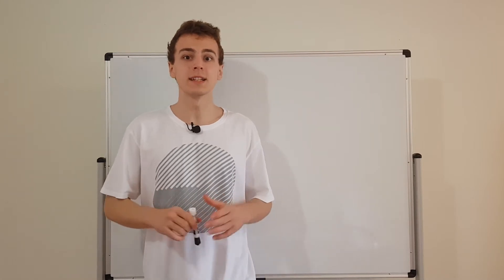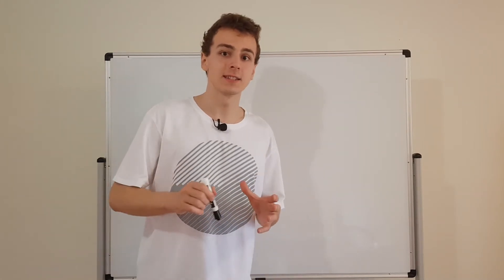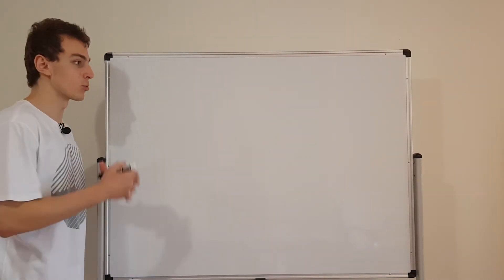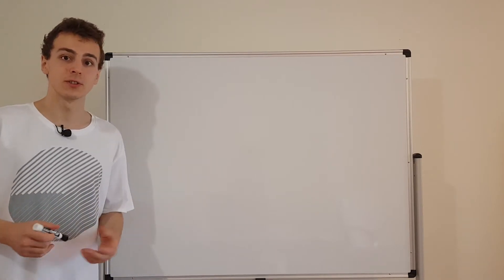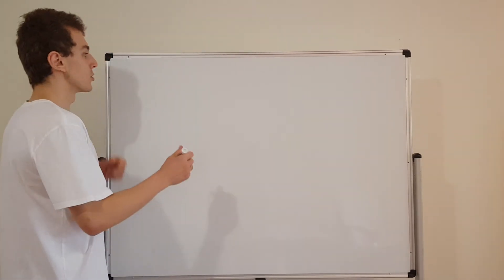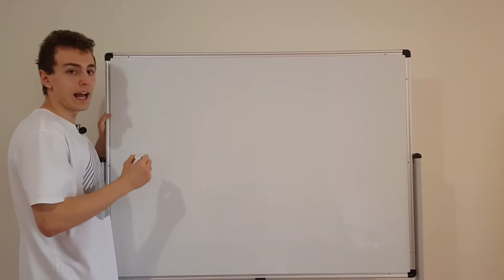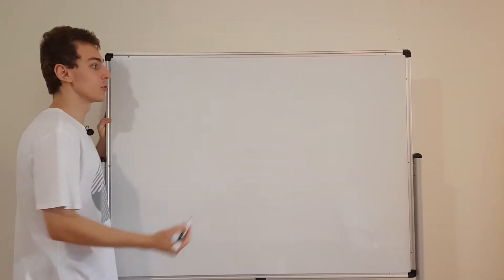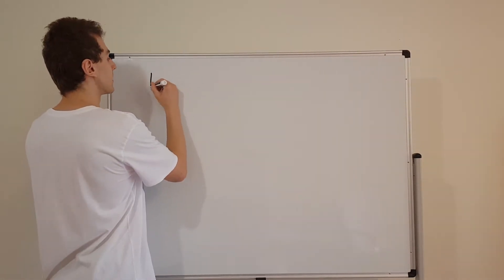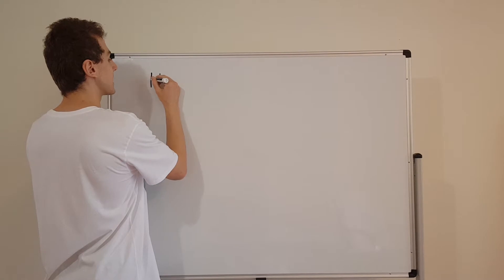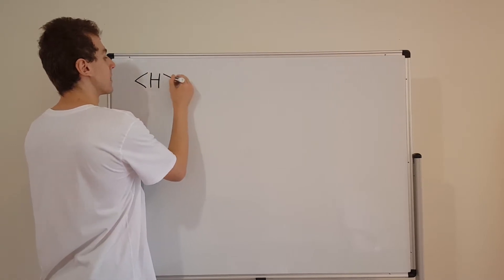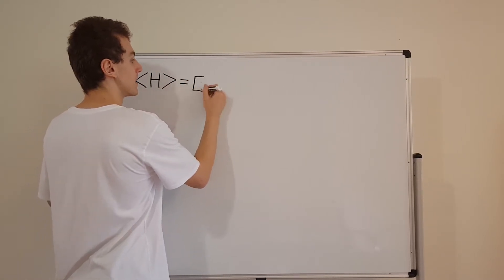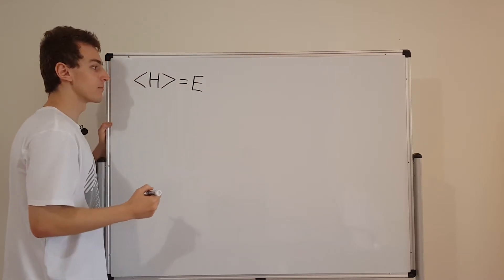First of all, I want to summarize some facts that we actually managed to derive in the previous videos. Let's have a look at the Hamiltonian and its expectation value. The Hamiltonian, if we take its expectation value, that is actually equal to E. Now this is true for a stationary state.